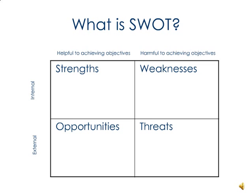Whereas the bottom two — Opportunities and Threats — they're external. They're about the environment, they're about the culture around you, they're about society. The external factors coming into play.